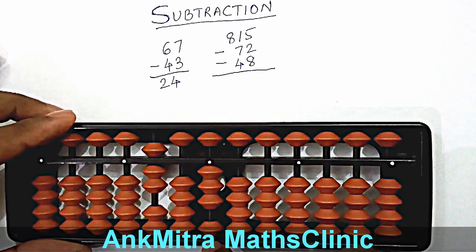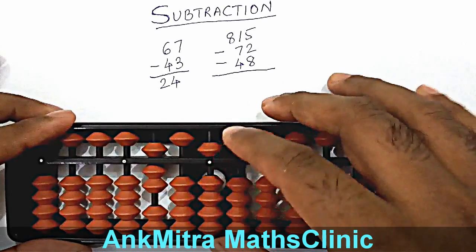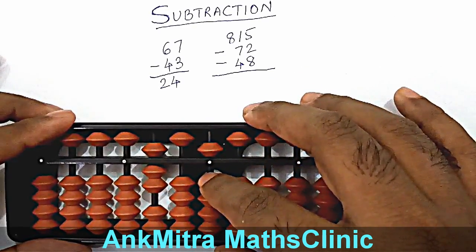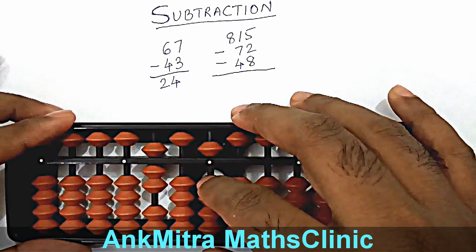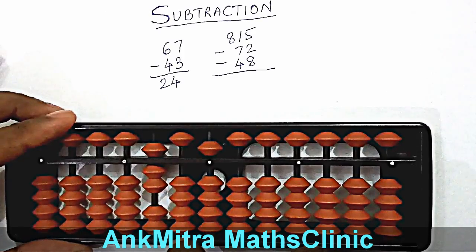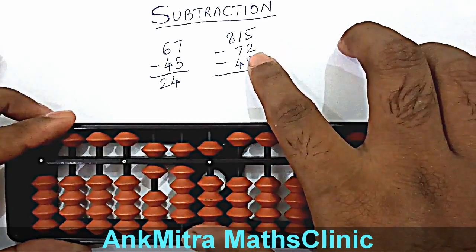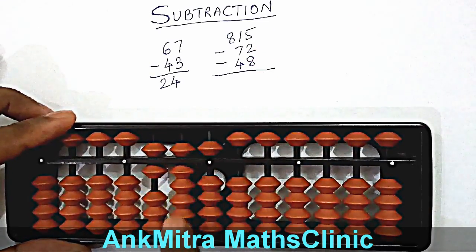For adding 2, we don't have 2 beads directly available. So we will have to use the small friend addition formula for 2, which will be done using plus 5 minus 3. This finishes the plus 2 part. And after plus 2 is done, we subtract 10 on this rod. We don't have 10 available here, so we'll use the big friend formula: big friend of 1 is 9. So we'll add 9 and subtract 10 to finish the minus 48. The final answer from 815 minus 72 minus 48 is 695.